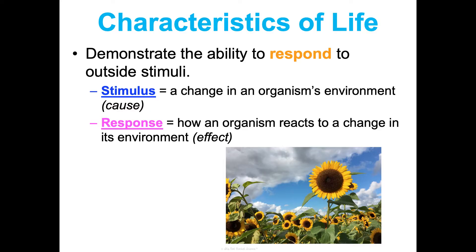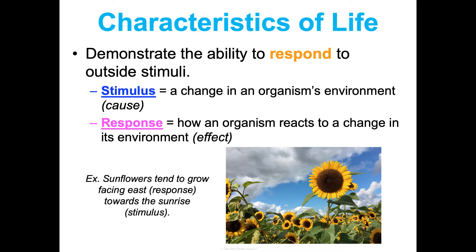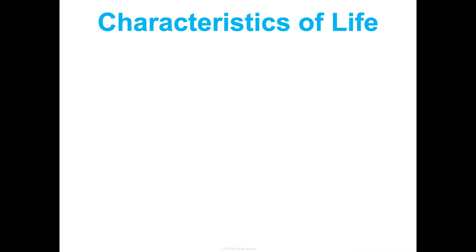Another way to phrase this is that living things maintain homeostasis, and they do that by responding to outside stimuli. That's not exclusive to animals — plants do it too. For example, sunflowers tend to grow facing east towards the sunrise. The stimulus is the sun rising and the response is the direction they face and their growth. So you have to be able to respond to stimuli.